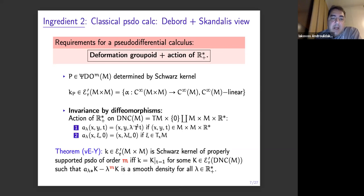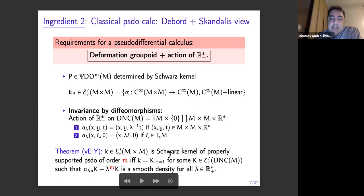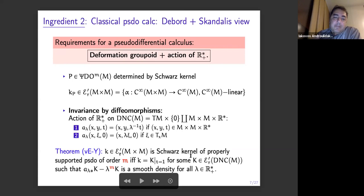Now, Eric van Erp and Robert Junkien were able to prove the following theorem in a recent paper: when is a distribution actually the Schwartz kernel of a pseudo-differential operator of order M, properly supported? Well, it is so if and only if it is the restriction to T equals one of some distribution on the deformation normal cone. And where is the order? The order is in the homogeneity — the alpha-lambda-star is the pushforward of this action — so this is the point of view that works for differential operators for us.